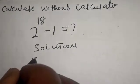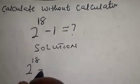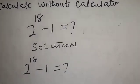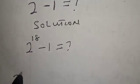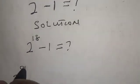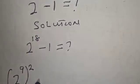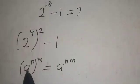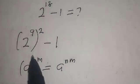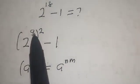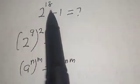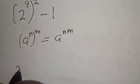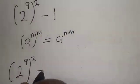Solution: 2 raised to power 18 minus 1 equals what? And 2 raised to power 18 is the same thing as 2 raised to power 9, raised to power 2, minus 1. A raised to power n raised to power m is equal to a raised to power nm. If you multiply 9 times 2, it's going to give you 18 back.